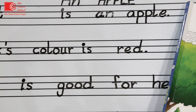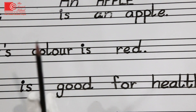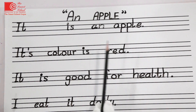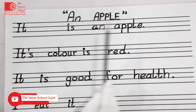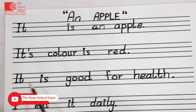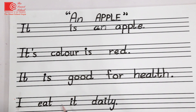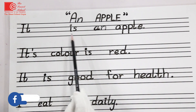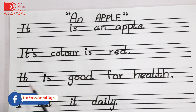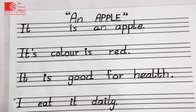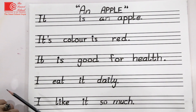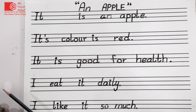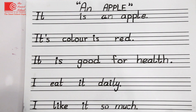After that, you have to write this essay in your notebook as well. It is: It is an apple. Its color is red. It is good for health. I eat it daily. I like it so much. This is a shade — its color is green. This is good for health. I eat it daily. I like it so much. This is a five-line essay on an apple. You have to memorize it and write it in your notebook as well. Do your work carefully.